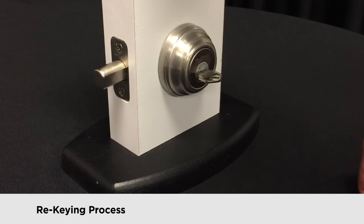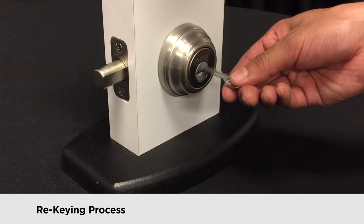Remove the smart key tool and remove the functioning key. Insert the new key that you want to work with the cylinder.